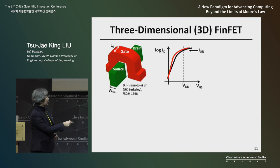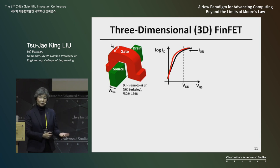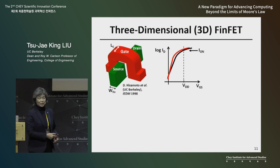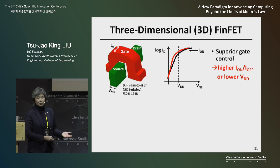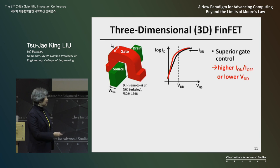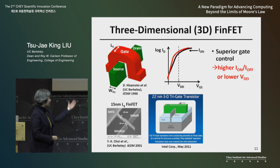As long as the width of that silicon fin is smaller than the gate length, this transistor can operate much better because the gate can control the current better — you get steeper turn-on characteristics. We can actually operate the FinFET at lower voltage and still have good on-current for the same off-current. You can operate it at lower voltage and still have good performance, giving better energy efficiency with FinFET.